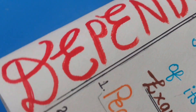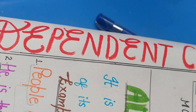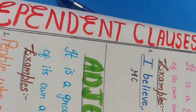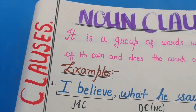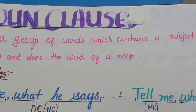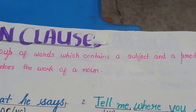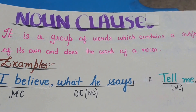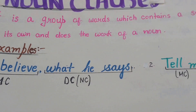Now, coming again to the dependent clause — the first type is the noun clause. A noun clause is a group of words which contains a subject and a predicate of its own and does the work of a noun. Example: 'I believe what he says.' Here, 'I believe' is the main clause and 'what he says' is the dependent noun clause, depending on the main clause.